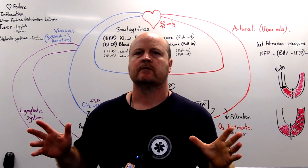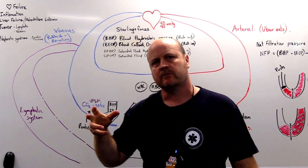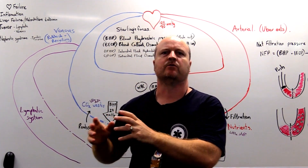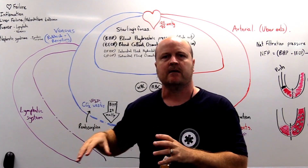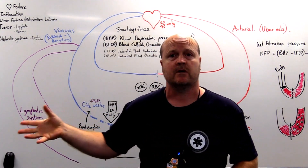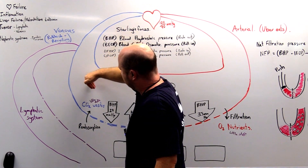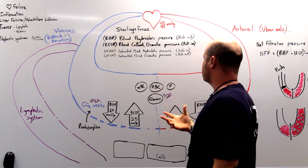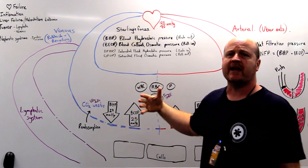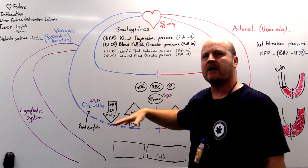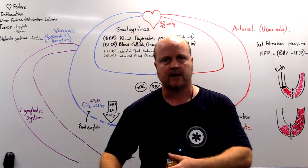So now what happens when things go wrong? If we look at heart failure — if the right side of our heart struggles to pump blood away from our body towards the lungs, then that blood is going to start building up in the body, in the capillary system of our systemic circulation. This is going to increase our blood hydrostatic pressure, and therefore we're going to have more force pushing fluid out of our capillaries. This is going to lead to edema — peripheral edema, ascites.